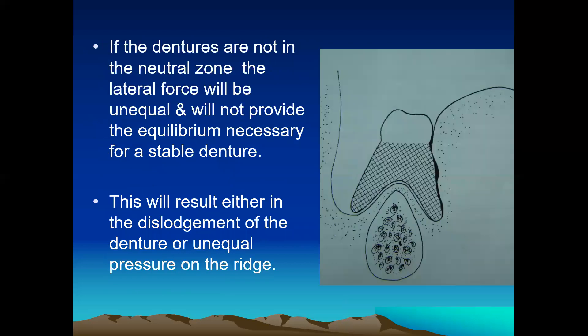If the dentures are not in the Neutral Zone, the lateral forces will be unequal and will not provide the equilibrium necessary for a stable denture. This will result either in the dislodgement of the denture or unequal pressure on the ridge, which can also create unwanted resorption of the ridge.